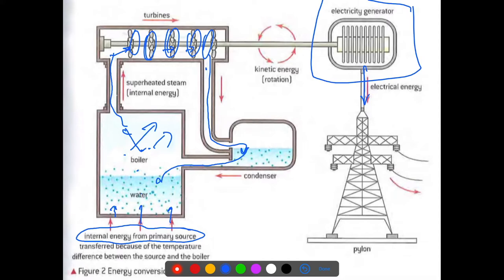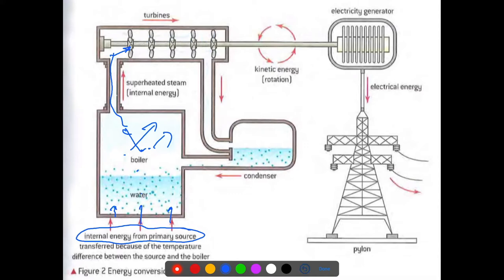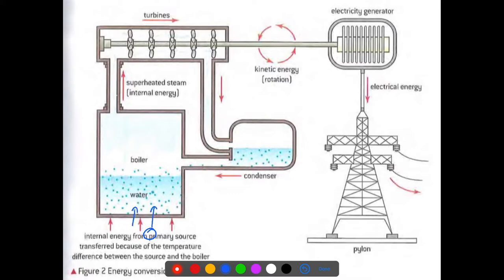This is a very important idea as we go forward. Now, a couple of things to consider: what are the energy transfers that take place as we go through this process? We have internal energy in the primary source. The primary source is usually burned, which releases that as heat. The heat is transferred into the water, which goes into potential energy, allowing it to break bonds and become a gas. Then it goes into kinetic energy — internal energy → heat → increased potential energy and kinetic energy → turbines. The kinetic energy pushes on the turbines, turning it into rotational kinetic energy, because the turbines aren't actually moving anywhere, they're just spinning.